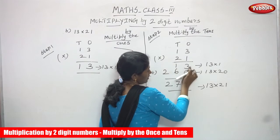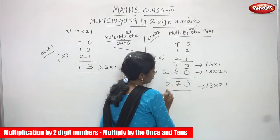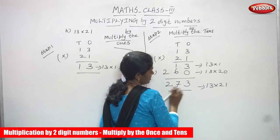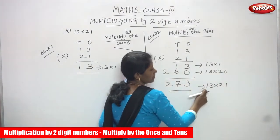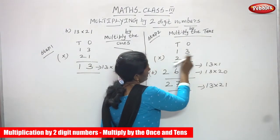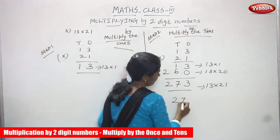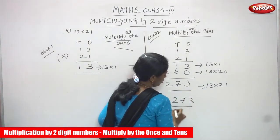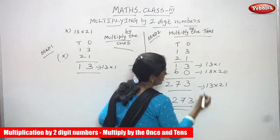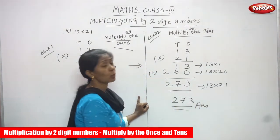Now add the two results: 3 plus 0 is 3, 6 plus 1 is 7, and bring down 2 as it is. The answer is 273. So 13 into 21, the answer is 273. That is the right answer for this question.